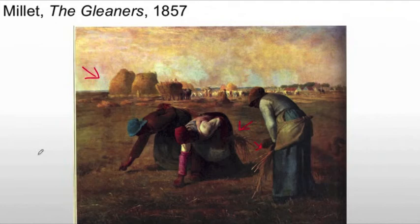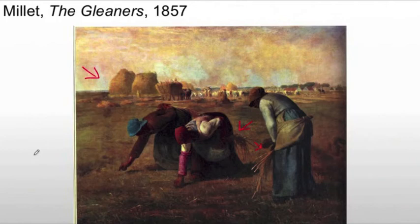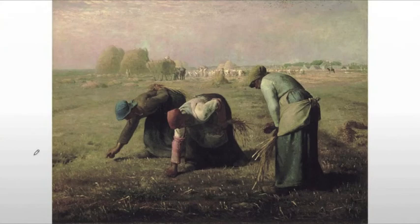The problem here is class — the separation of classes, how good the upper class has it especially in comparison to the poor. As a proper working society, you would imagine the two would be a lot closer, but not here. The public will react to this painting with disdain and suspicion. We have an artist acting as social consciousness to the nation. Interestingly, the middle class did not typically allow gleaning rights — only the upper class did.